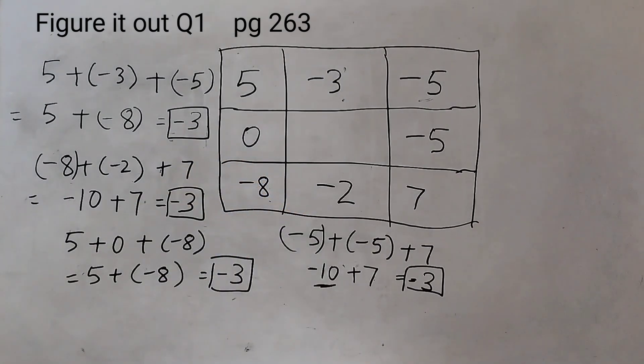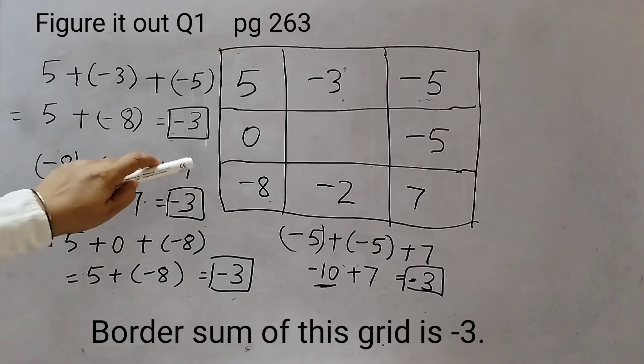The sum is minus 3. And this sum is the border sum for this given grid. That is the border sum. I hope this is clear to you. Thank you.